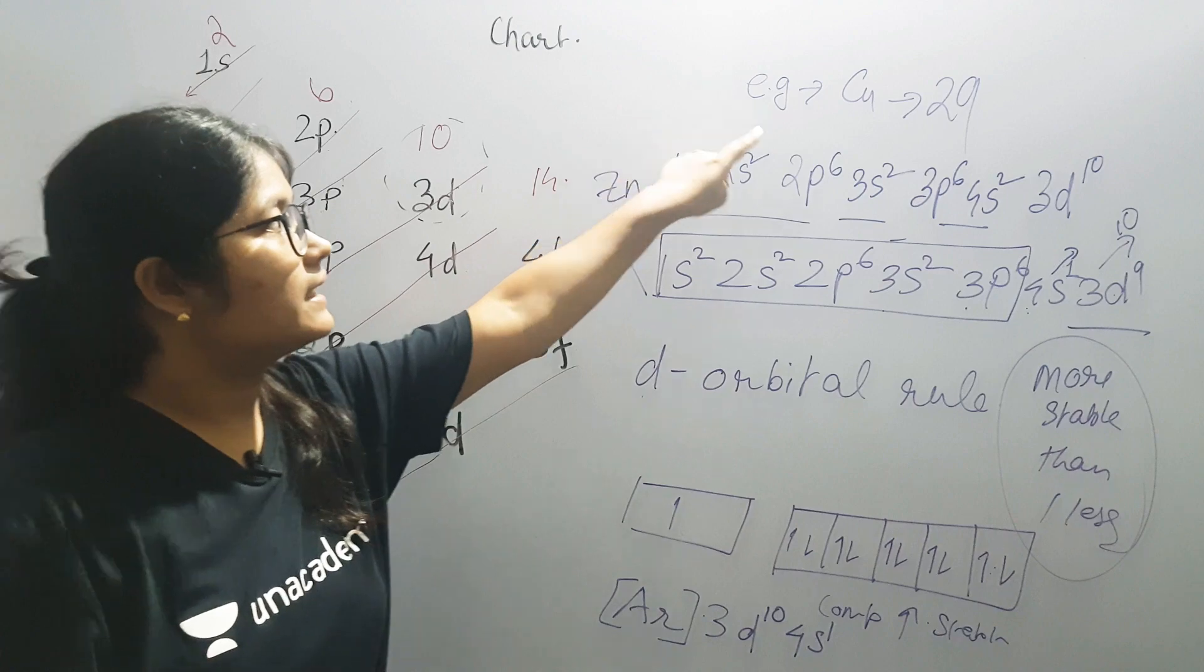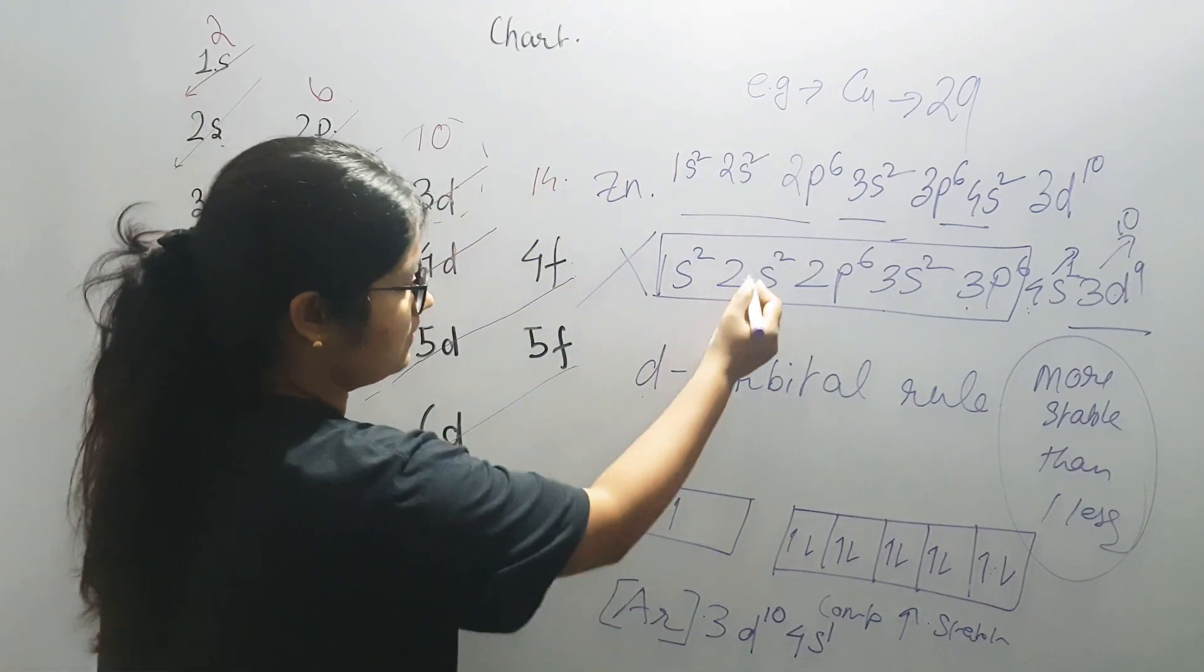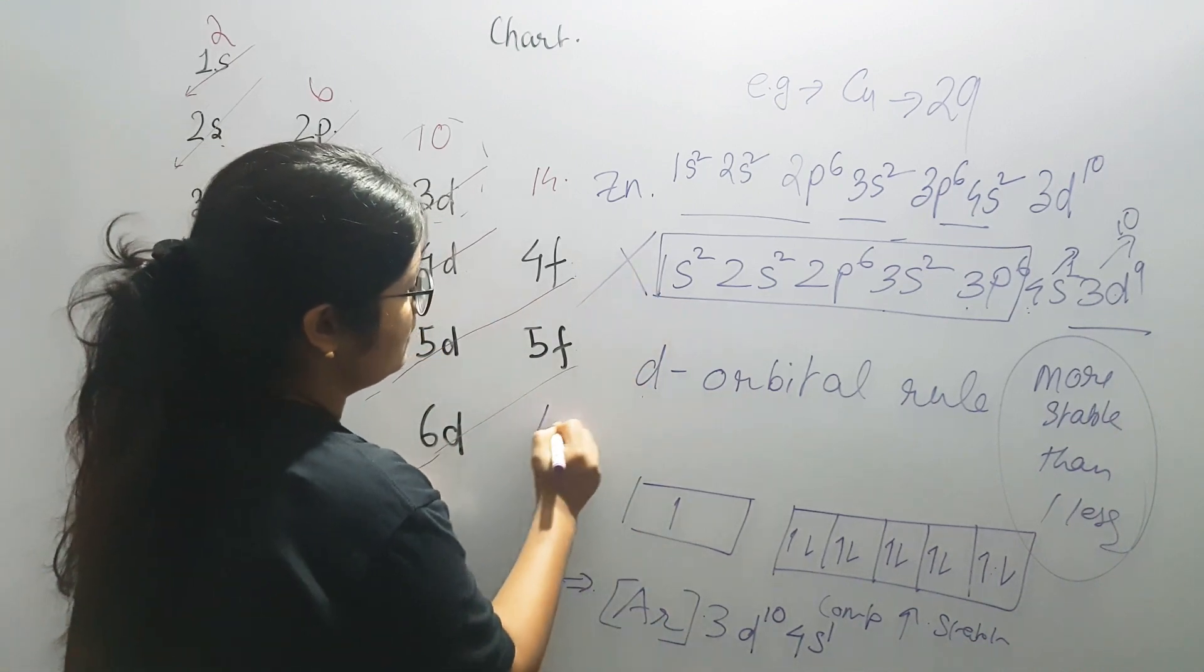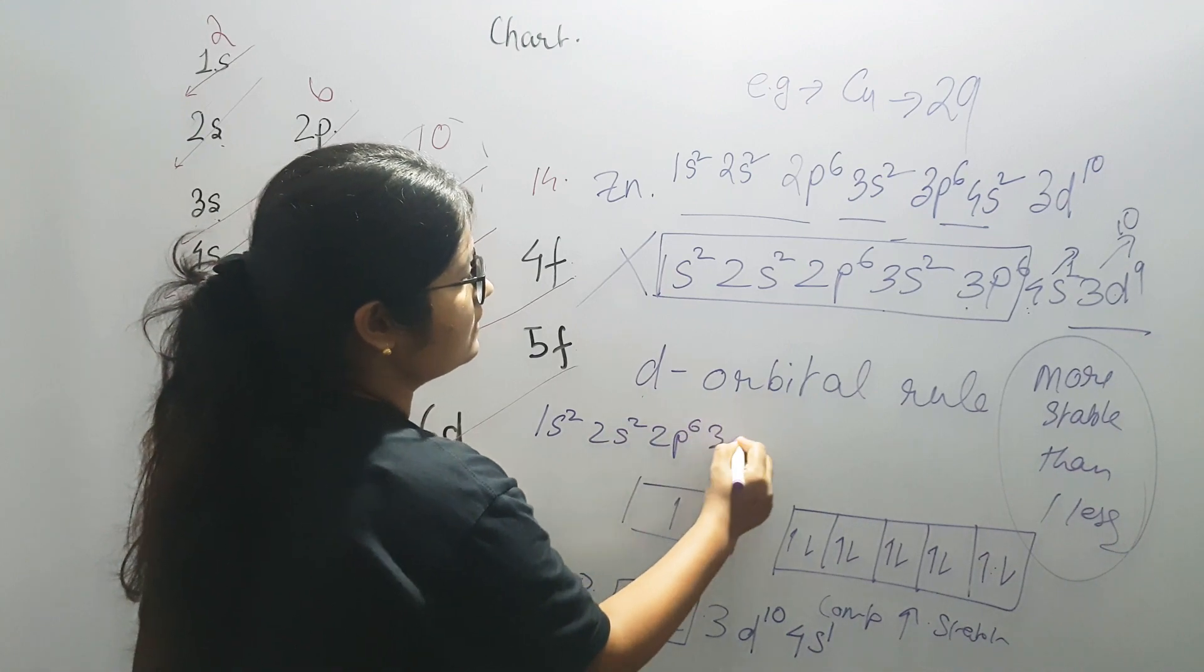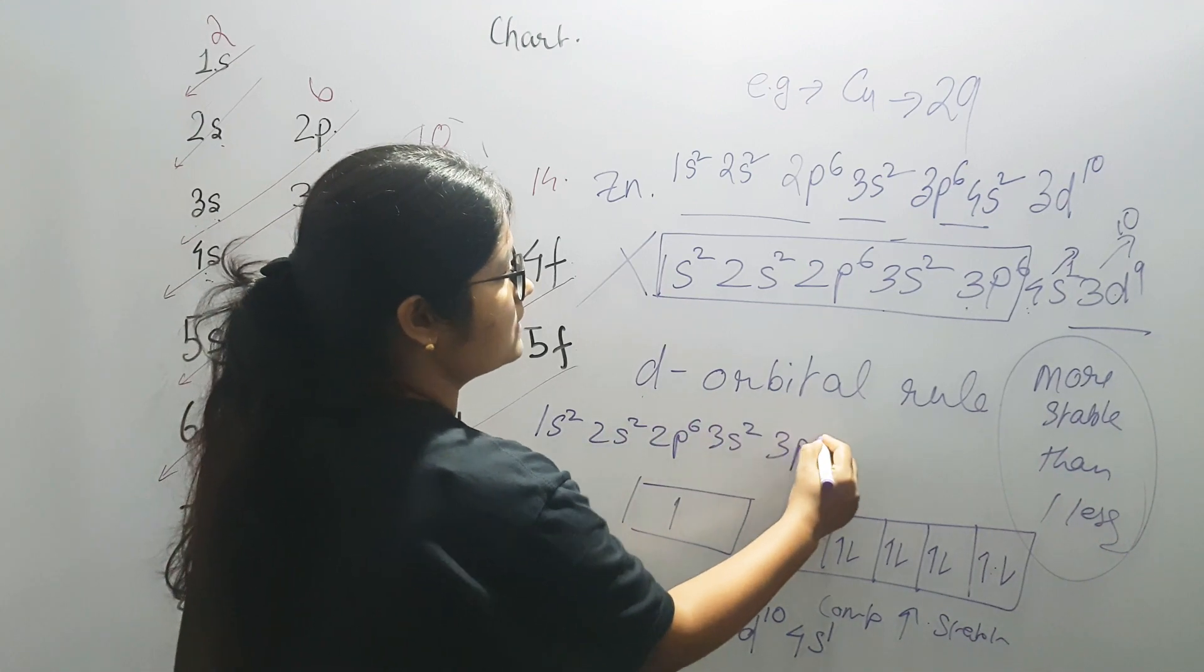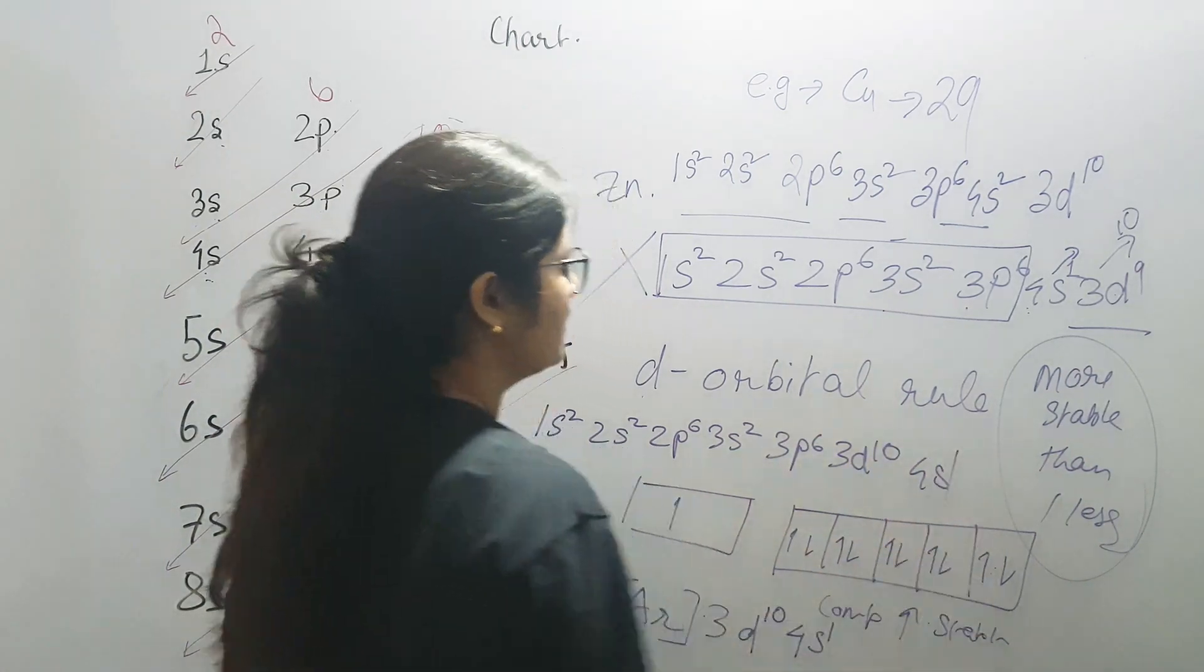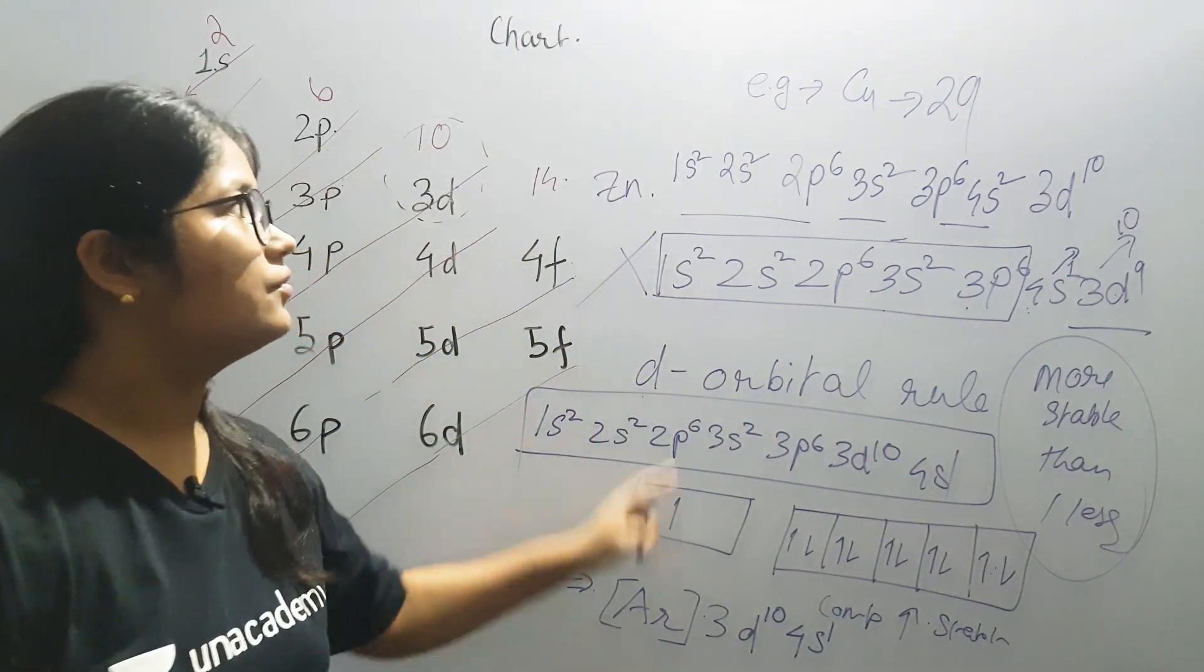So what is the correct sequence for copper? The correct sequence of copper is, if you are not comfortable with argon, then write it all. It is 1s2, 2s2, 2p6, 3s2, 3p6, 3d10 and then 4s1. So this is the correct electron configuration for copper.